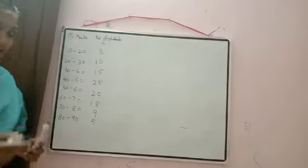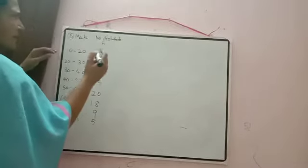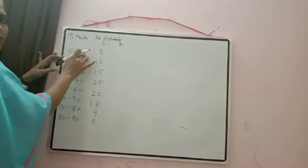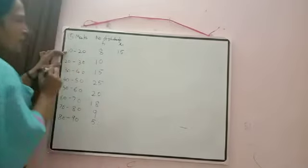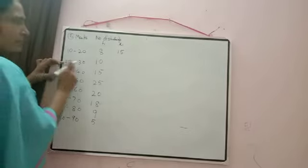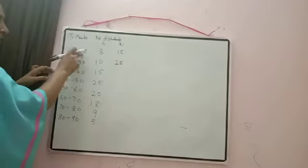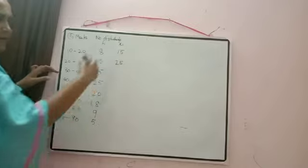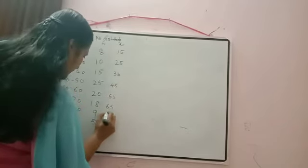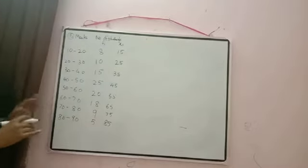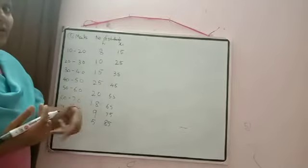In the previous question xᵢ was given, but in this question xᵢ is not given. xᵢ here means the class mark. How we calculate the class mark: (upper limit + lower limit) / 2. So 10-20: (20+10)/2 = 15. 20-30: (30+20)/2 = 25. You can see the pattern — the difference is 10, so successive class marks are: 15, 25, 35, 45, 55, 65, 75, 85. To avoid big calculations, we use the step deviation method.